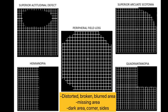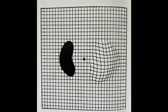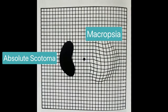If you detect any subtle problems, immediately report to the ophthalmologist. These changes can include distorted, broken, or blurred areas, missing areas, or dark areas either at the corners or the sides.